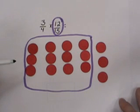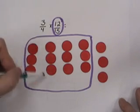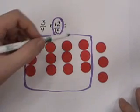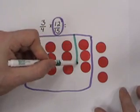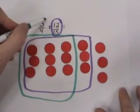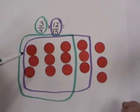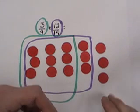I need to represent 3 quarters. 1 quarter, 2 quarters, 3 quarters. I'm going to circle this area in a different colored marker. So the area that is circled in the green represents 3 quarters of 12 fifteenths.